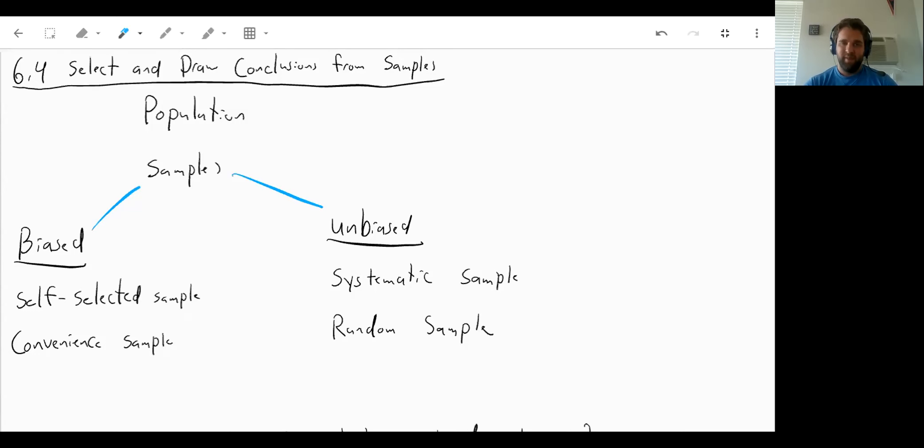A convenience sample is if you are the person who's figuring out the sample of people, you're just going to do whatever is most convenient. So you just call the people who you have their numbers in your phone, or actually more likely you text the people whose numbers you have in your phone. If I wanted to find out what is the favorite lunch at school, and I only asked my class.